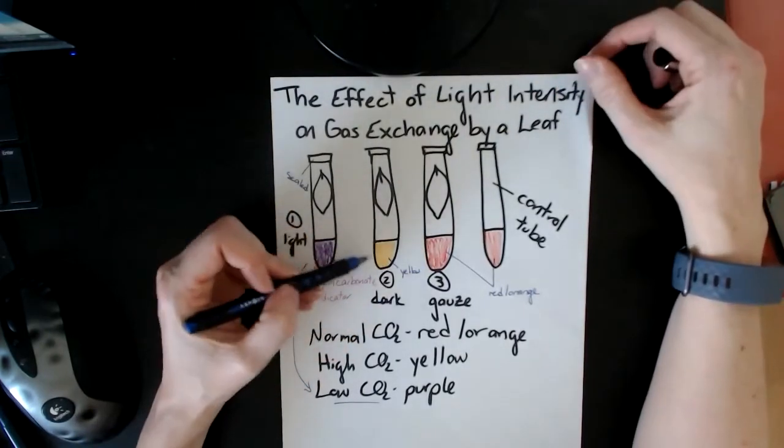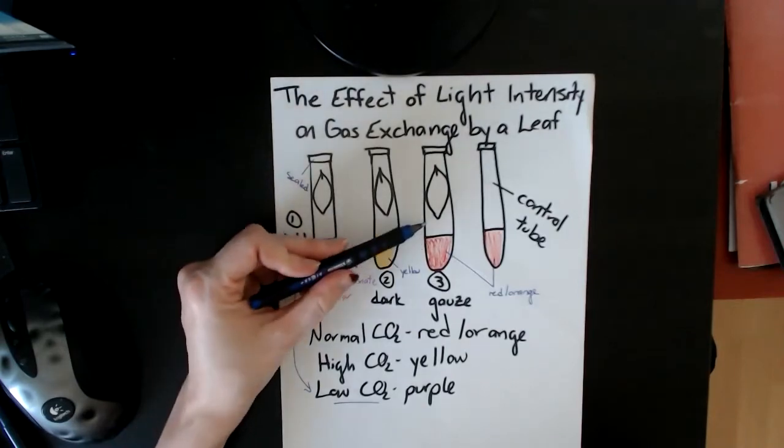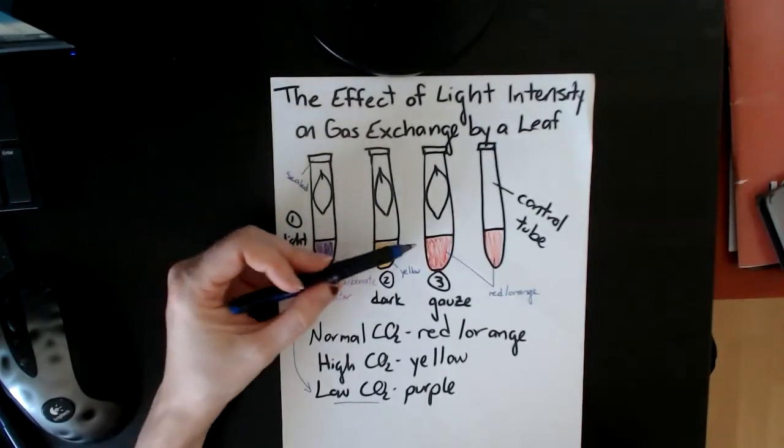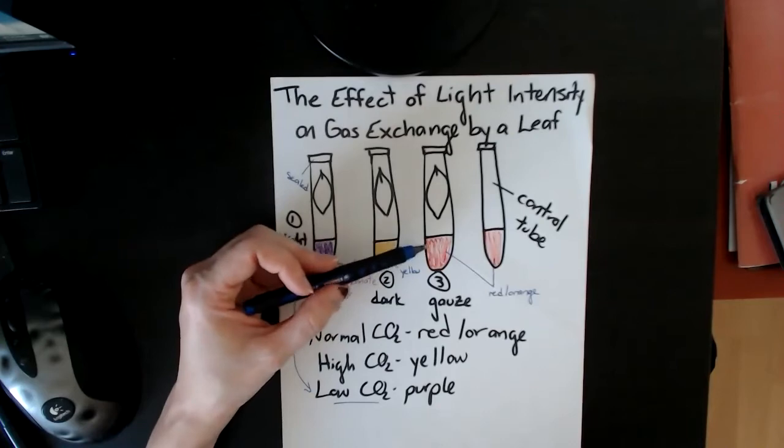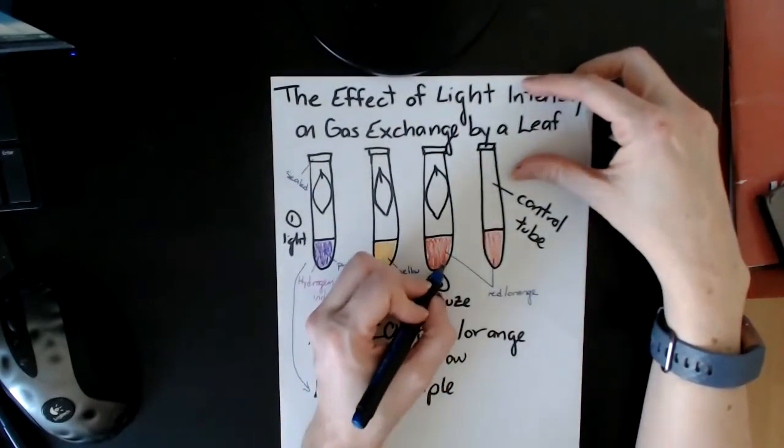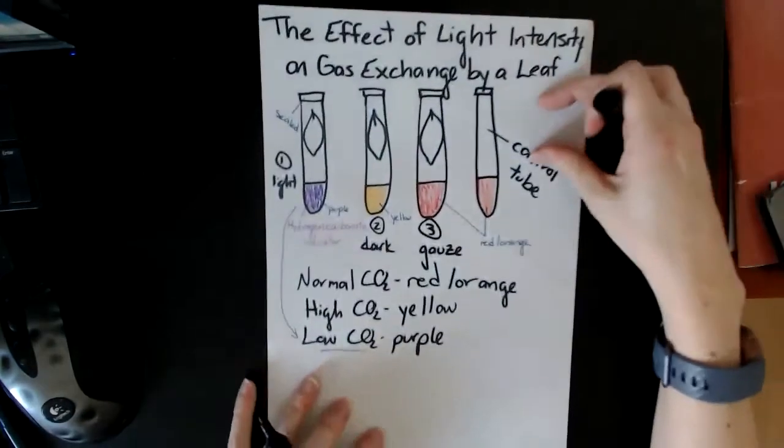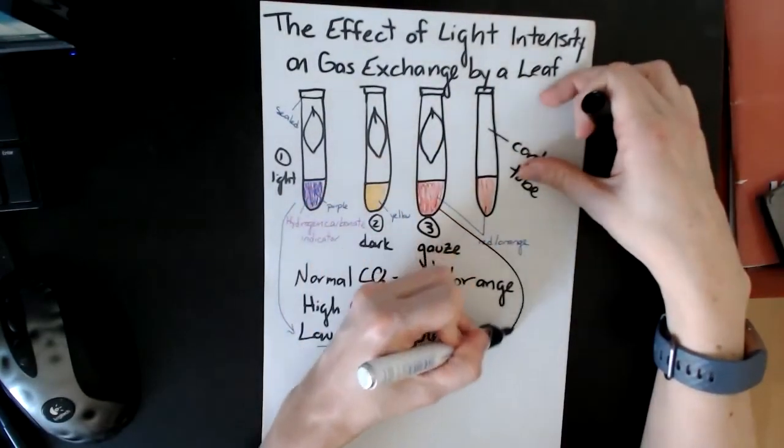The one with gauze, you have some light, so it's not totally yellow, so there is some photosynthesis going on. But it's also not able to do tons of it because the light isn't very bright. So the idea with the gauze here, with the normal CO2, this one, the idea is that the rate of respiration is equal to the rate of photosynthesis.